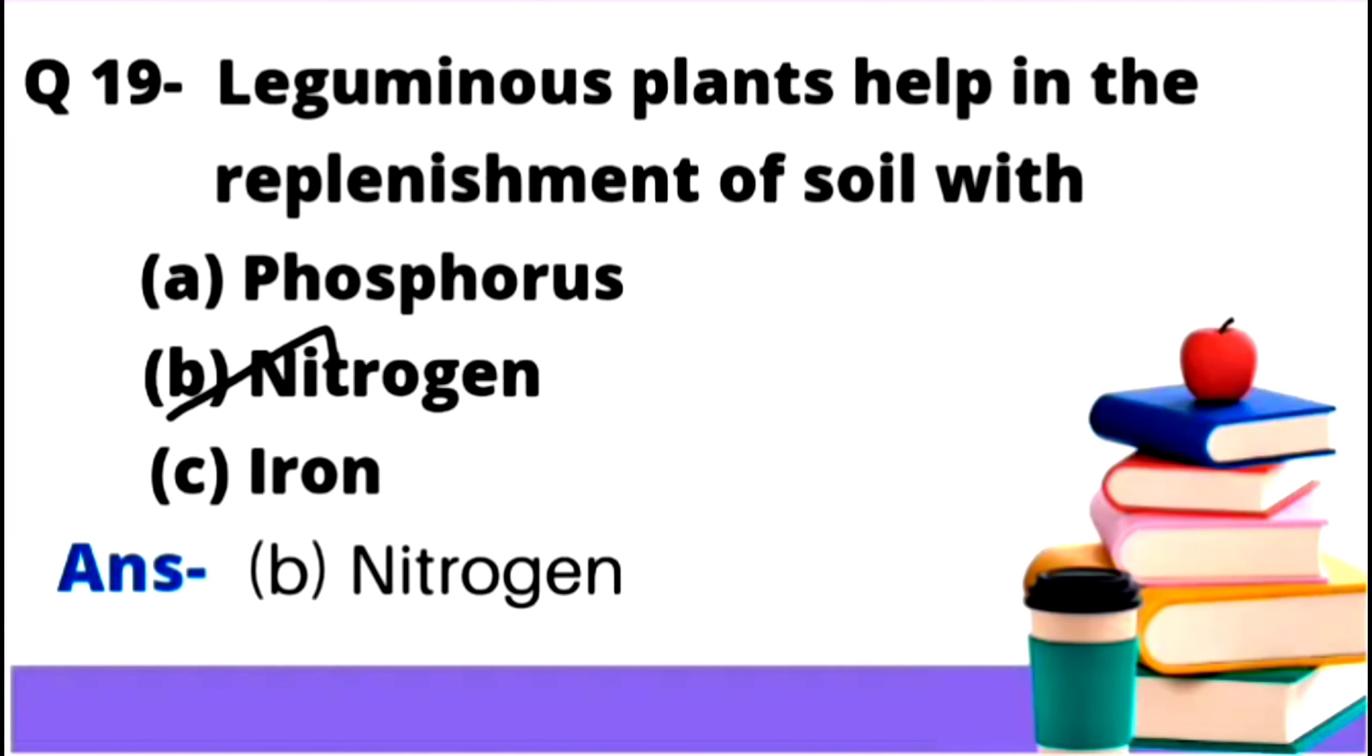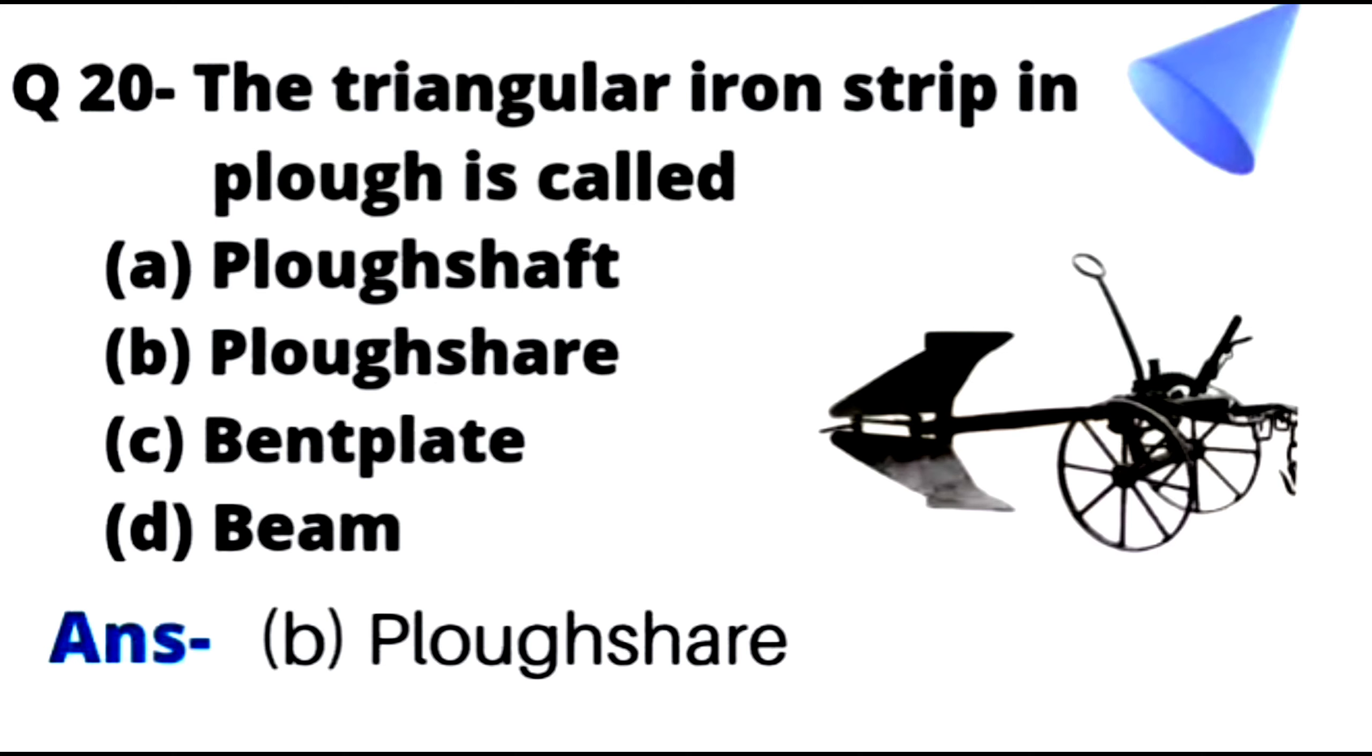The last question: The triangular iron strip in plough is called option A ploughshaft, option B ploughshare, option C bent plate, and option D beam. Here in the diagram you can see the plough. This is the triangular side strip. The right answer is option number B, that is ploughshare. This triangular shape we call ploughshare.